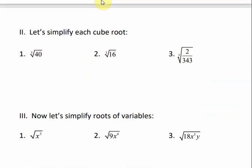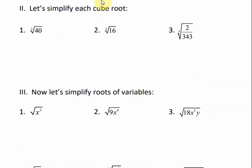Now let's simplify cube roots. For cube roots, let's determine what is the biggest perfect cube that will divide into the number. Let's think about our perfect cube numbers. I know that 8 is a perfect cube, and 8 will divide into 40. So the cube root of 8 times 5 is the same as the cube root of 40. The cube root of 8 is 2, so 2 comes on the outside, and 5 stays under the radical.